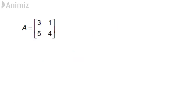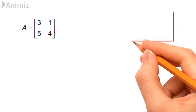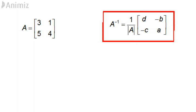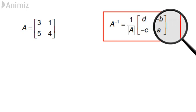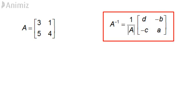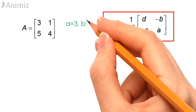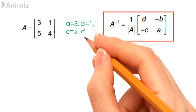A is a 2 by 2 matrix, therefore its inverse is found by using the formula 1 divided by the determinant of A multiplied by the matrix of elements D, negative B, negative C, and A. D, negative B, negative C, and A here come from the original 2 by 2 matrix with elements A, B, C, and D.